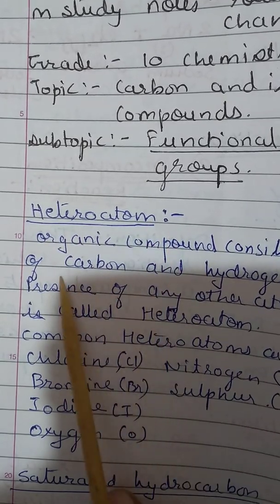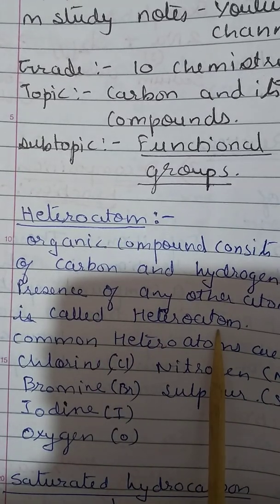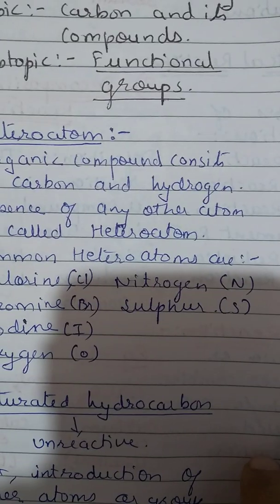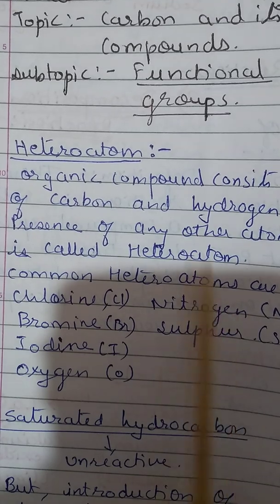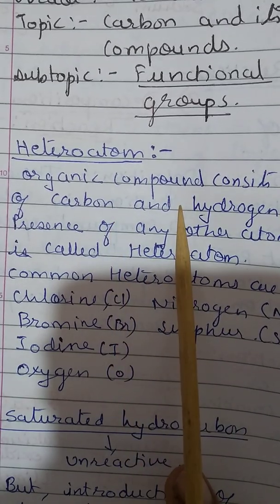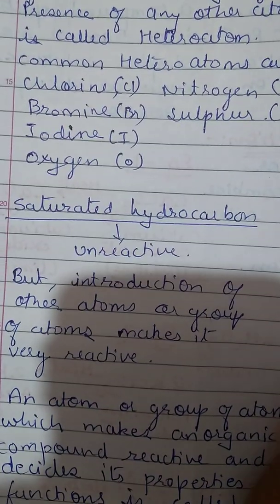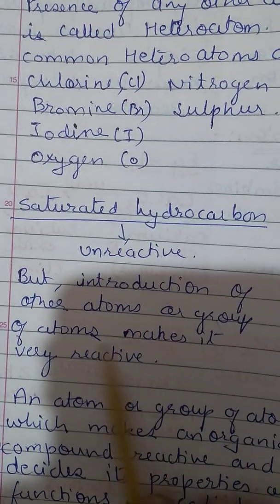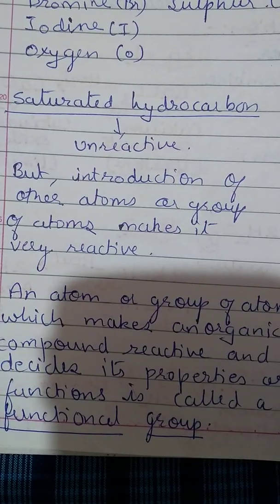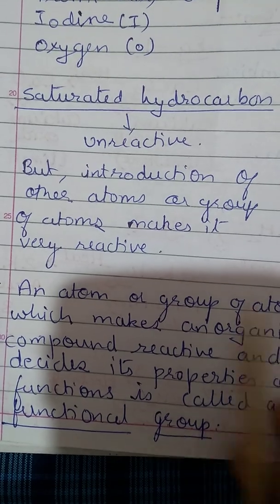For understanding functional groups, first we have to understand the hetero atom. Organic compounds consist of carbon and hydrogen. The presence of any other atom is called a hetero atom. Common hetero atoms are chlorine, bromine, iodine, oxygen, nitrogen, and sulfur. Apart from hydrogen and carbon, any other atom present in an organic compound is called a hetero atom. Saturated hydrocarbons are unreactive, but introduction of other atoms or groups of atoms makes them very reactive.